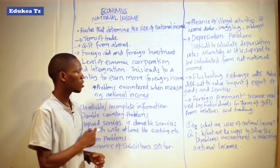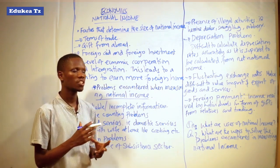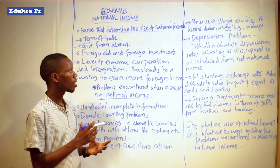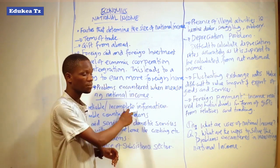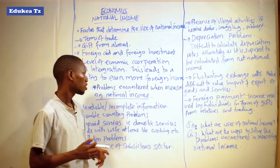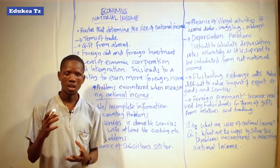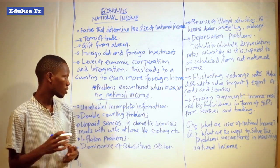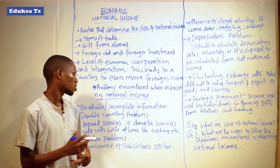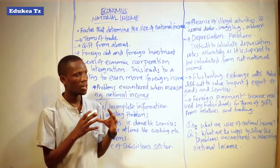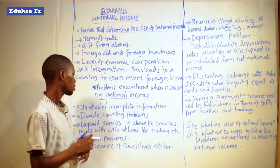A country with a large number of people who tend not to tell the truth or who have a habit of evading taxes makes enumeration of national income more difficult. In contrast, in a country where people understand the importance of measuring national income and provide clear information, the process of measuring national income will be well conducted.